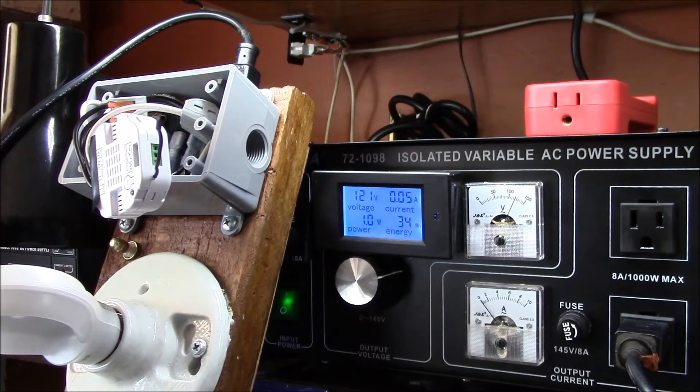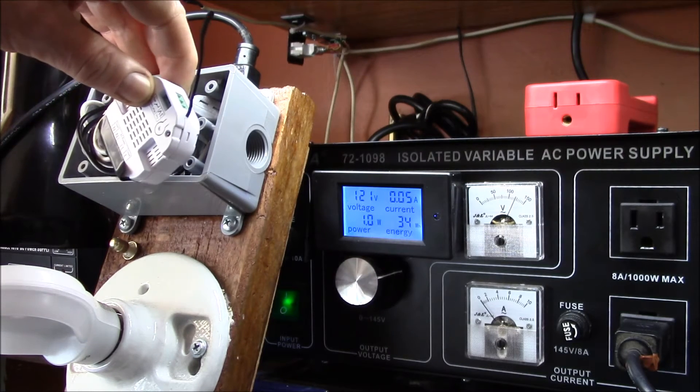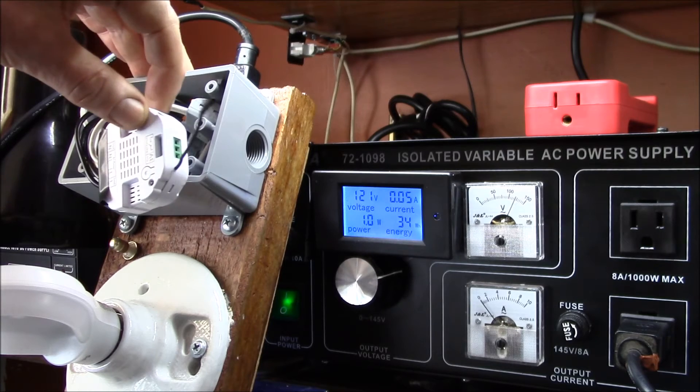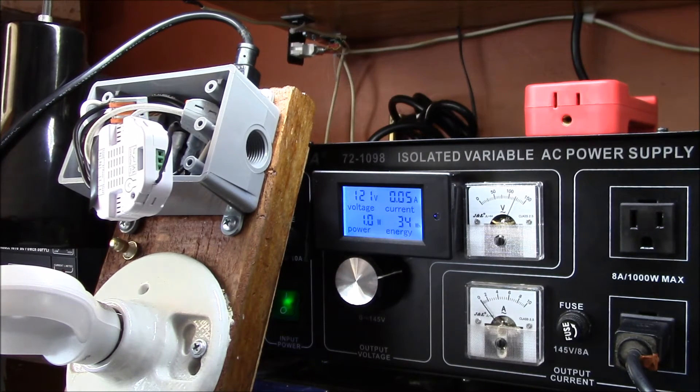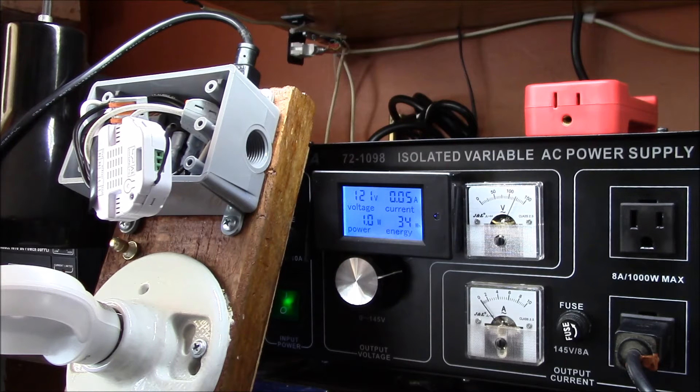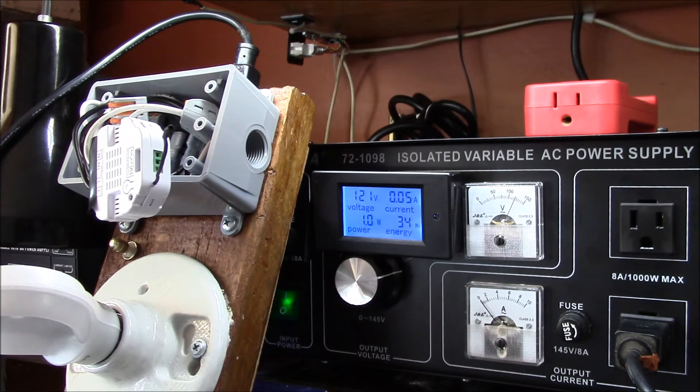So this device apparently uses about 10 milliamps of current and four-tenths of a watt of power. So you're looking at about three and a half kilowatt hours a year to have one of these devices inside of an electrical box and not doing anything.